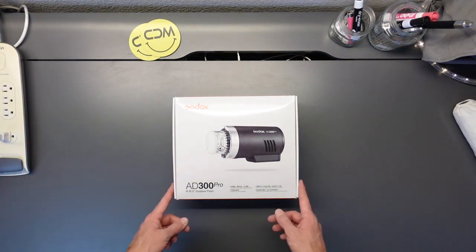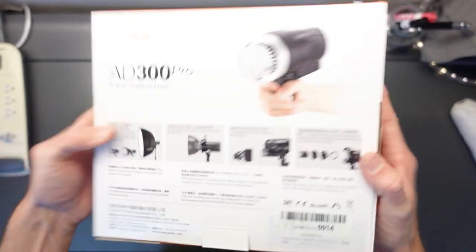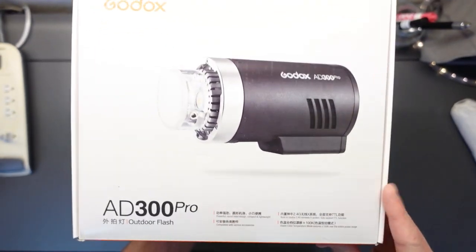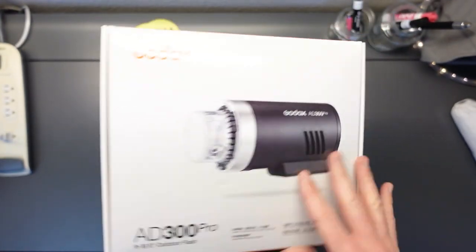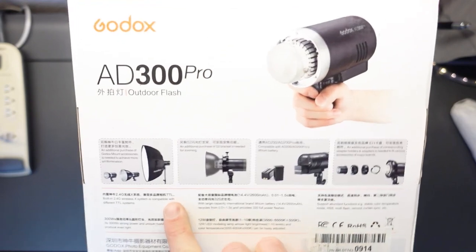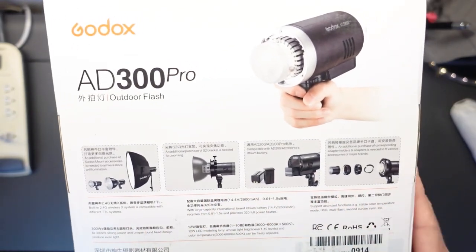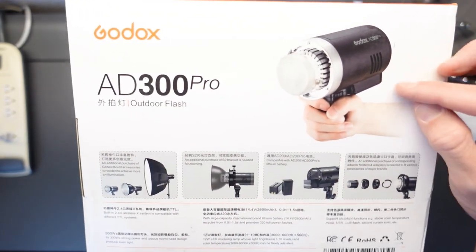All right, without further ado, let's open this puppy up. Before we go on, let's take a look at the box. Obviously, there's nothing too whiz-bang here. It just gives you a picture of what you're getting. The back, I did want to show, has a few of the other offerings that you can get related to the ecosystem for the AD300 Pro.